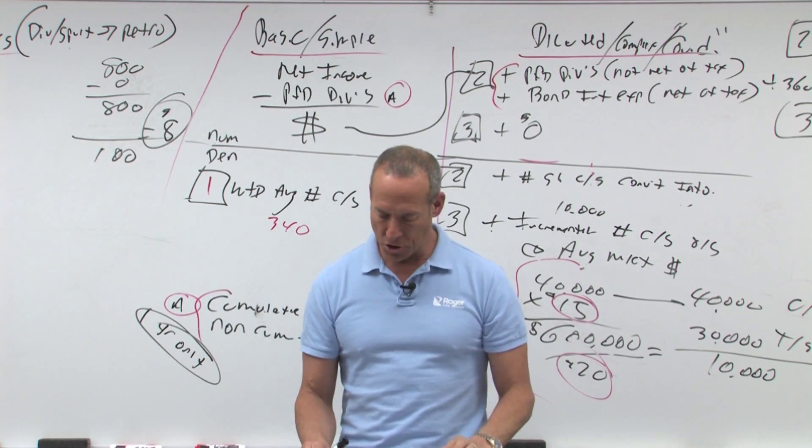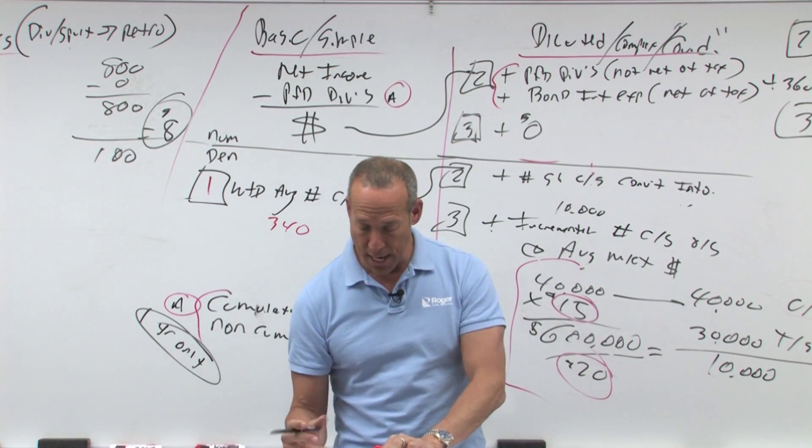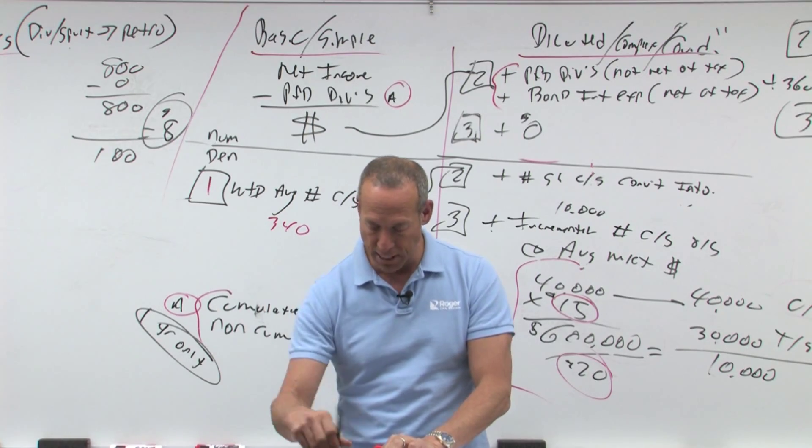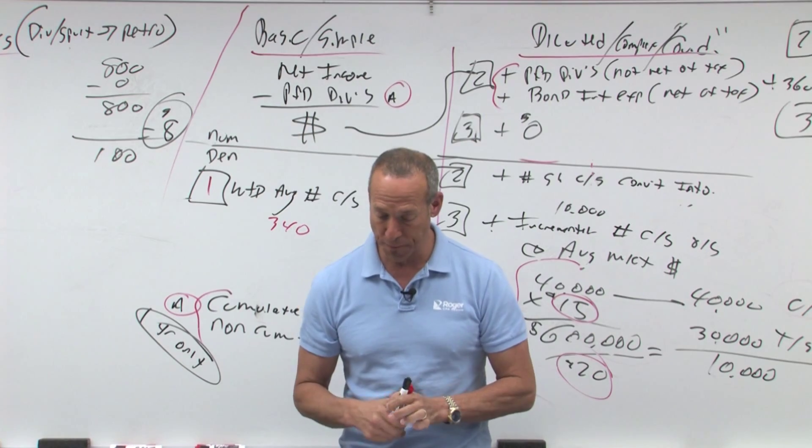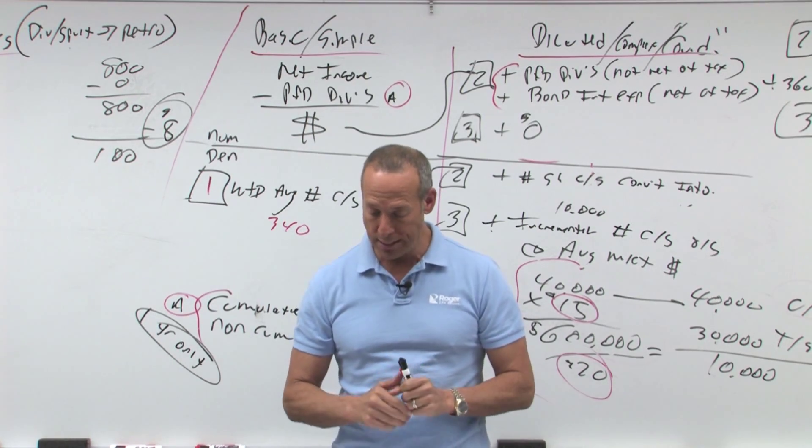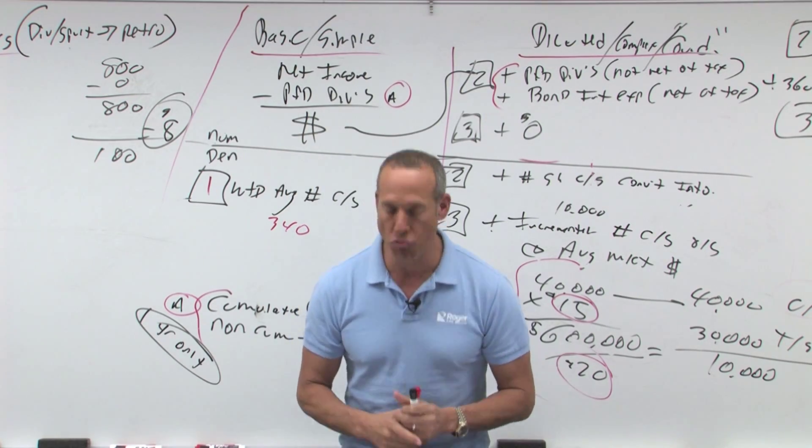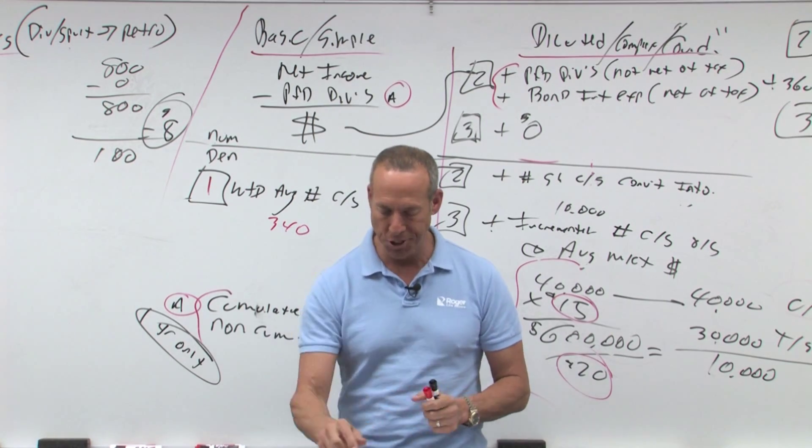During X2, 100,000 shares of common stock were outstanding. In X3, two distributions of additional common shares occurred. On April 1st, April Fools, 20,000 shares of treasury stock were sold. And on July, you lie, a two for one split was issued.